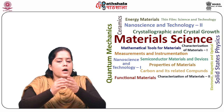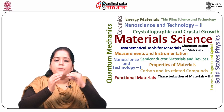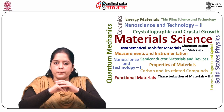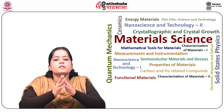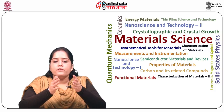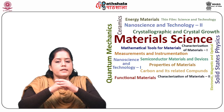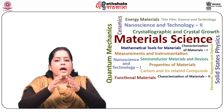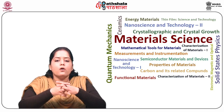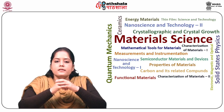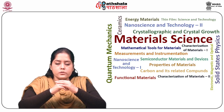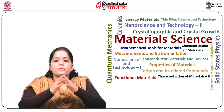Electron microscopes are scientific instruments that use a beam of energetic electrons to examine objects on a very fine scale. Electron microscopes were developed due to the limitations of light microscopes, which are limited by the physics of light. In the early 1930s, this theoretical limit had been reached and it was a scientific desire to see the fine details of the interior structure of organic cells. This required 10,000x plus magnification.